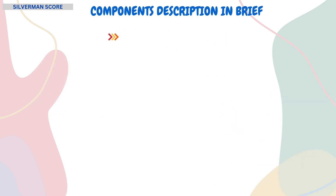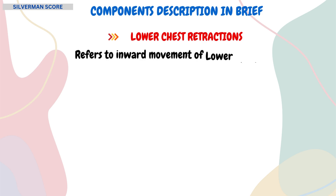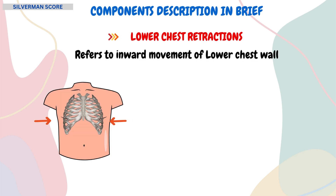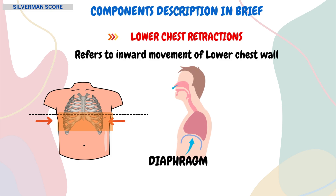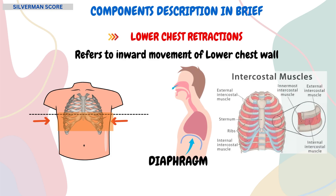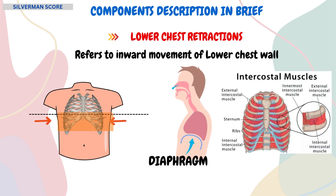Then comes the lower chest retractions. It refers to the inward movement of the lower chest wall, specifically the intercostal spaces below the nipple line during inhalation. This happens when the diaphragm and intercostal muscles contract to help expand the lungs.